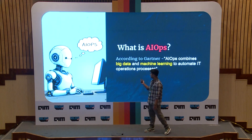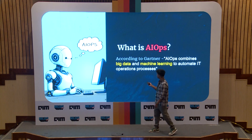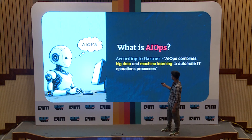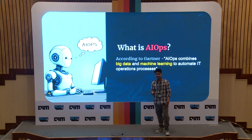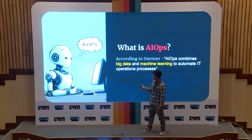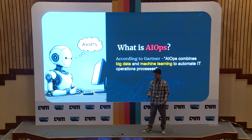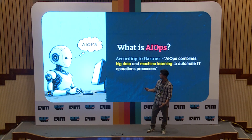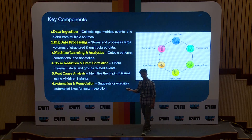This is Gartner's definition of AIOps. Gartner says AIOps combines big data and machine learning to automate IT operations processes. I will also explain how this works, what the key components of AIOps are, and how companies actually use AIOps.